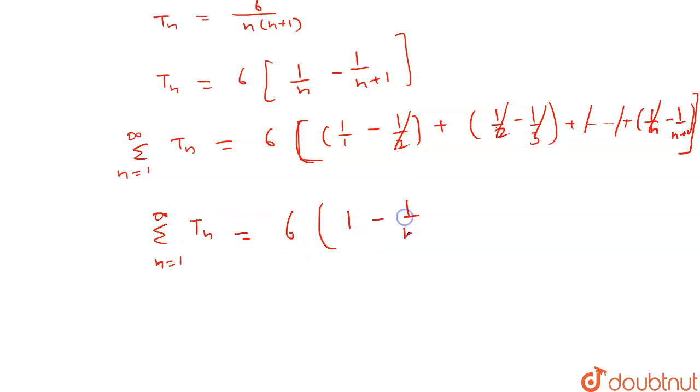Here n is tending towards infinity, so this will become 1 upon infinity, that is 0. So summation of Tn from n equals 1 to infinity is equals to 6.